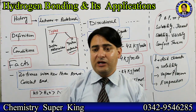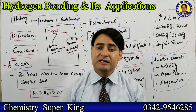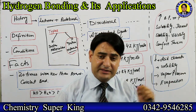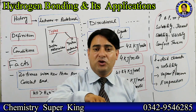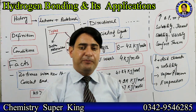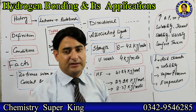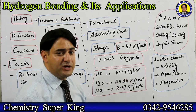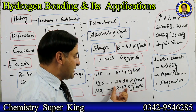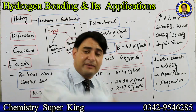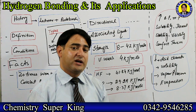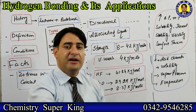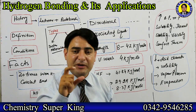In liquid water, the extent of hydrogen bonding is maximum among common molecules. For boiling point, the order is: water, then HF, then ammonia. However, for hydrogen bond strength, the order is: HF is stronger than water, which is stronger than ammonia. This is a point of confusion — do not mix up boiling point order with hydrogen bond strength order.